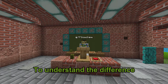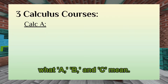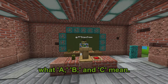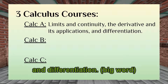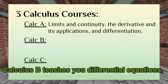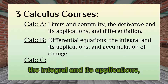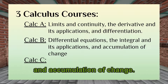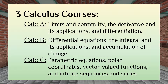To understand the difference between the two courses, we need to first understand what A, B, and C mean. Calculus A teaches you about limits and continuity, the derivative and its applications, and differentiation. Calculus B teaches you differential equations, the integral and its applications, and accumulation of change. Calculus C teaches you parametric equations, polar coordinates, vector-valued functions, and infinite sequences and series.